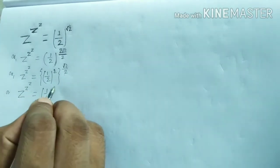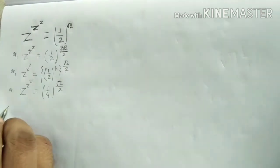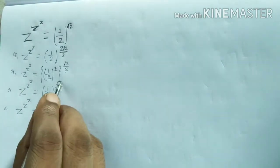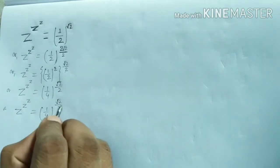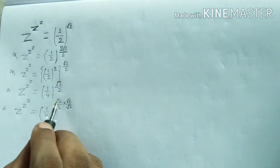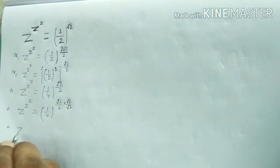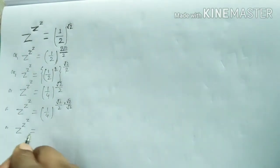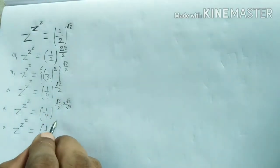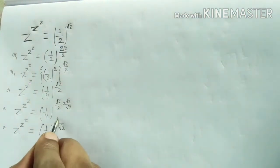So 1 by 4 to the power root over 2 by 2. Now root over 2 by 2 — we can multiply both numerator and denominator by root over 2. So I have multiplied — it is both numerators by root over 2. So z to the power z to the power z is equal to 1 by 4 to the power root 2 into root 2, which means 2, by 2 into root 2, means it's 2 root 2. So this 2 and this 2 will be cancelled.